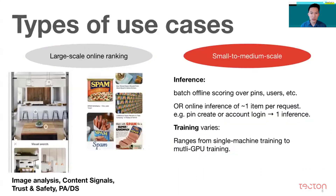The other category is what we call small to medium-scale machine learning. By most standards, these are still pretty large data sets, but the inference demands are a bit smaller. Every time a user takes an action, we need to perform a single inference. This is used for things like image analysis, detecting suspicious logins, or extracting the subject matter of a pin.